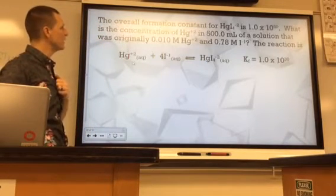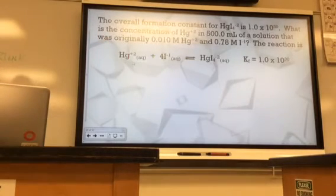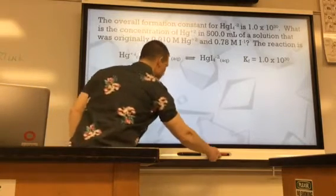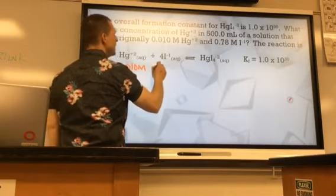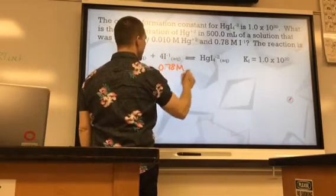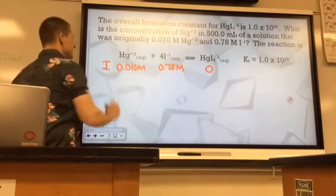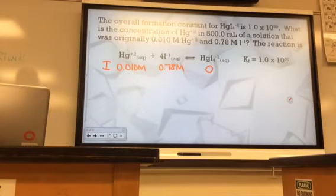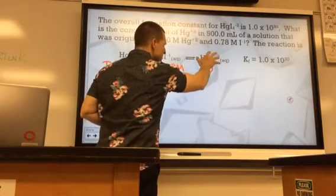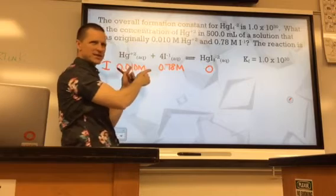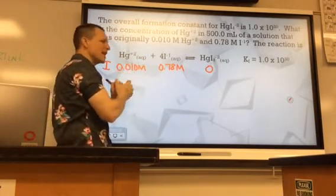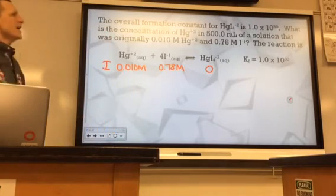So when the mercury ion and four iodide ions get together and make this mercury iodide complex ion, it's got a formation constant of 1 times 10 to the 30th power. So the question is, what is the concentration of the mercury ion if we have 500 ml of a solution originally? So I'm going to go ahead and just write these concentrations down. 0.01 molarity for that originally and 0.78 molarity for that. Originally that was zero. Okay, so this is our initial concentration. Do you see that K value? It's huge. Would you all agree that this reaction very heavily favors the right side?